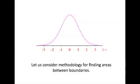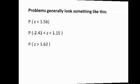This picture should look very familiar to you. This is the standard normal distribution. Remember, the standard normal distribution is a normal distribution with a mean of 0 and standard deviation of 1. Let us consider some methodologies for finding areas between boundaries.